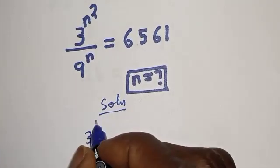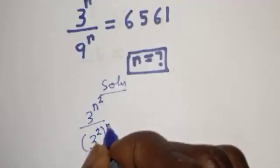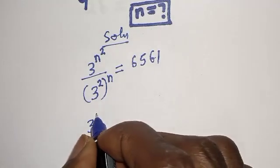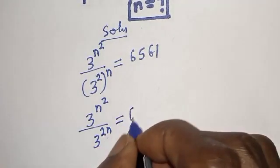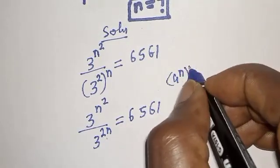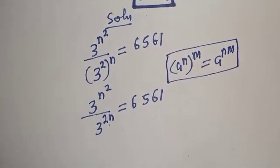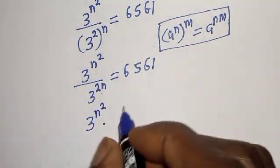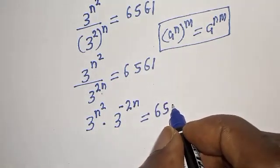We have 3 raised to power n squared divided by 9 raised to power n. This can be rewritten as 3 raised to power n squared over 3 raised to power 2n, equal to 6561. Then we have 3 raised to power n squared multiplied by 3 raised to power minus 2n, equal to 6561. This follows from the rule: a raised to power n, to the power of m, equals a raised to power n times m.